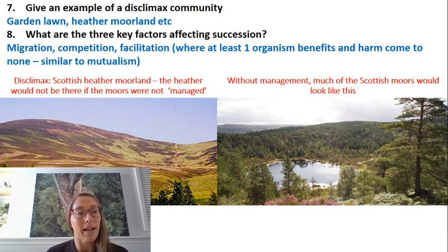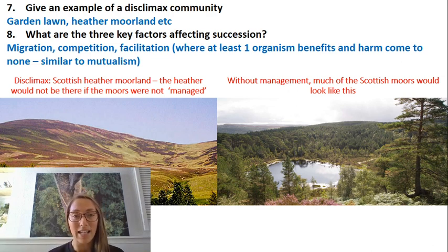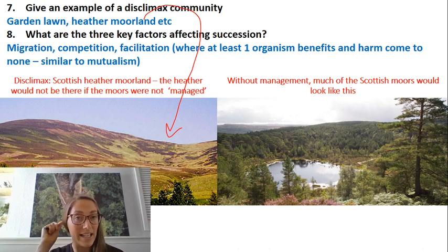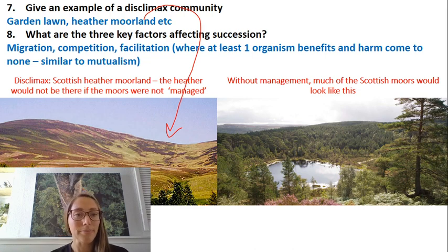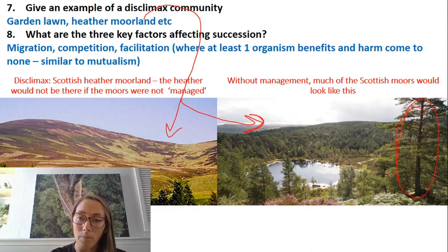An example of a disclimax community would be something like gardening — when you mow your lawn you cut down any shrubs that might be growing, keeping the organisms much shorter. Another example is heather moorland, which is managed — there's a case study in the activity about grouse management. If that area were left to go through succession it would look more like the image on the right, where a dominant species and climax community are reached.